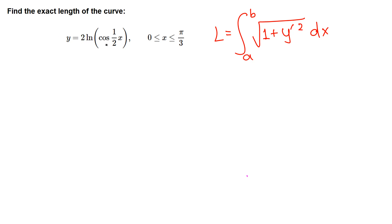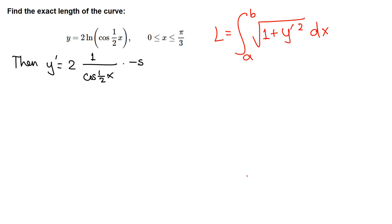So y is this function, then y' is 2 times ln of some function. The derivative of natural log is 1 over the inside function, so 1 over cosine(x/2). The derivative of the outer function (natural log) gives 1 over cosine(x/2), times the derivative of the inside. The derivative of cosine is negative sine(x/2), and we have one more inside, so times the derivative of (x/2) which is 1/2.